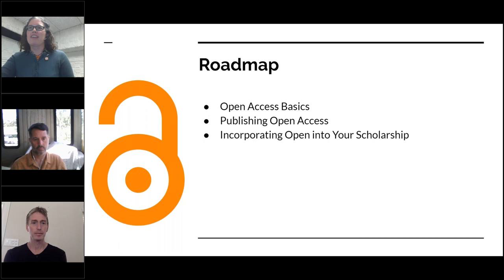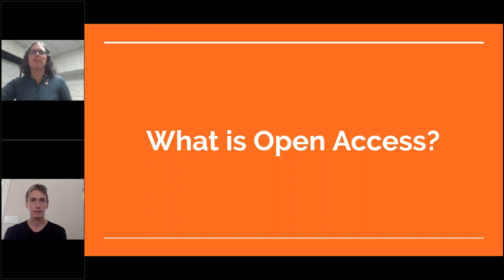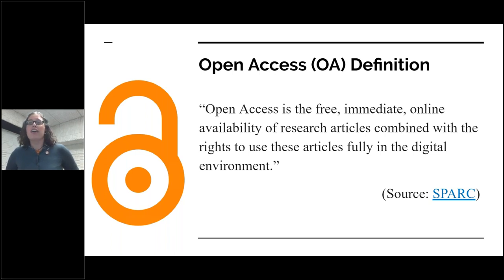I will start with open access basics. So let's ask a very basic question: what is open access? A lot of people have heard the term but it's not often defined clearly. I really prefer this definition from SPARC, the Scholarly Publishing and Academic Resources Coalition. Basically, open access is the free, immediate, online availability of research articles and, crucially, also the right to use and reuse these articles fully.